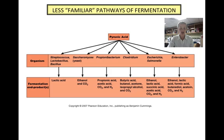Aside from lactic acid and alcoholic fermentation, there are a host of other, less familiar fermentation pathways. Various bacteria and yeast reduce pyruvic acid in a number of ways to form many different end products as they regenerate their supplies of NAD+ in order to continue glycolysis to generate ATP. The various fermentation end products of some different species of bacteria are seen in this diagram. You have performed a number of different metabolic tests in the lab that will help you identify an organism based on the end products of its metabolic pathway. Hopefully, after this lecture, you'll have a better understanding of what these tests actually mean.